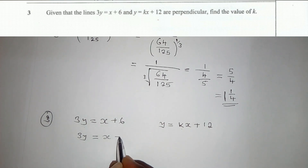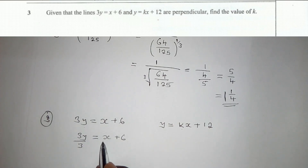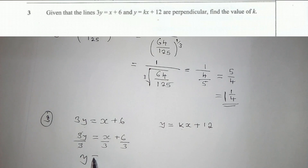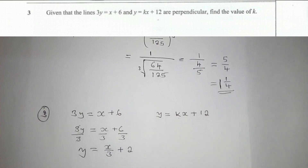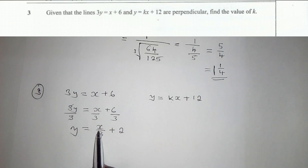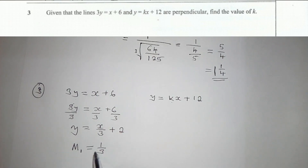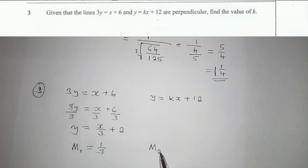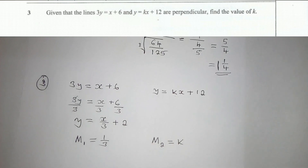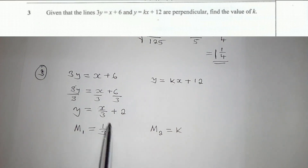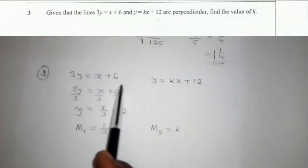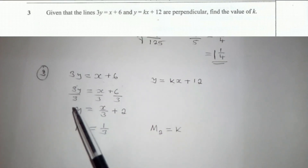We have 3y equals x plus 6, so we divide throughout by 3 to remain with y only, which gives y equals x over 3 plus 2. The gradient is the coefficient of x, so m₁ equals 1 over 3. The gradient of the second equation is m₂ equals k. There is a property whereby if two equations are perpendicular to each other, their gradients multiply to give negative 1.